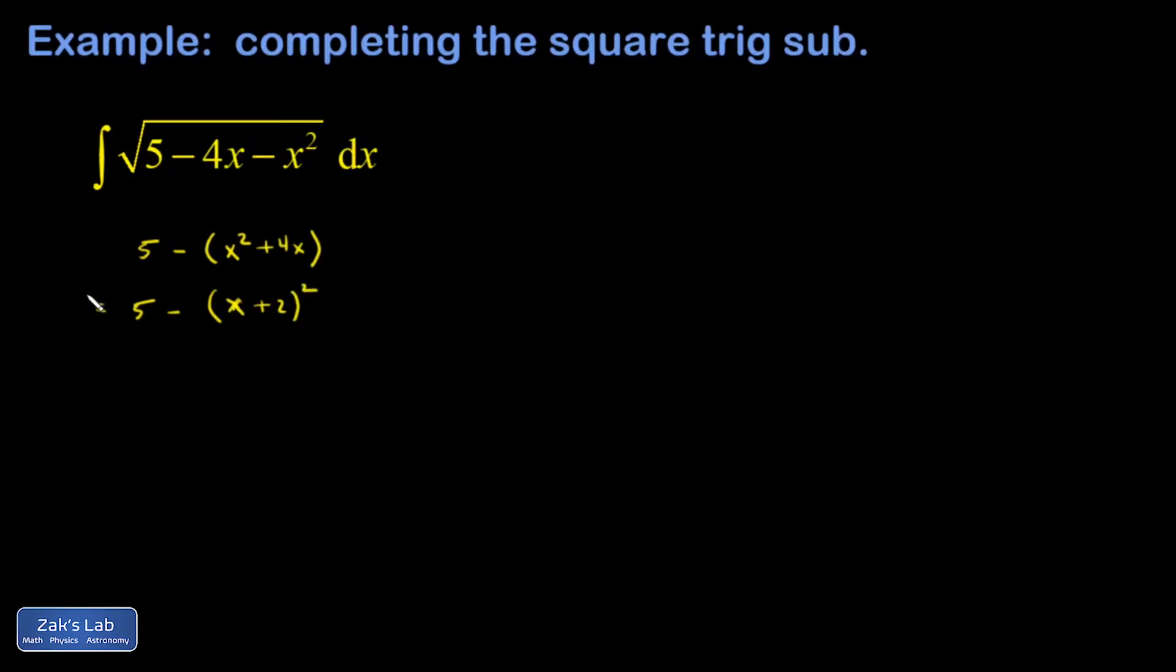This is not quite equal yet. If I were to expand that I would get 5 minus (x² + 4x + 4). Compared to what I started with, if I distribute that minus sign, I have 4 less than I used to. There's a minus 4 stuck on the original term, so I have to compensate for that by adding 4 back into the expression, and I get 9 minus the quantity (x + 2)².